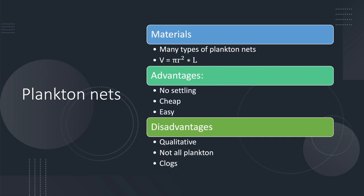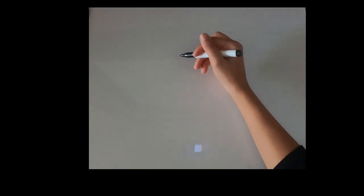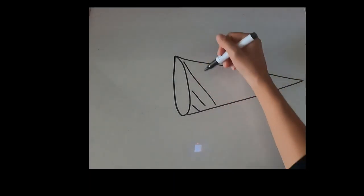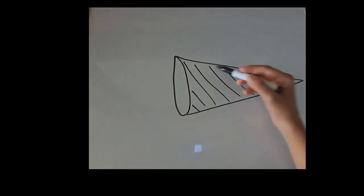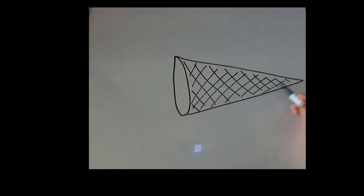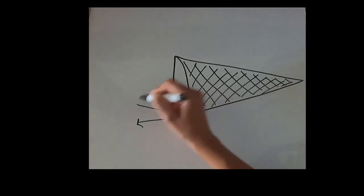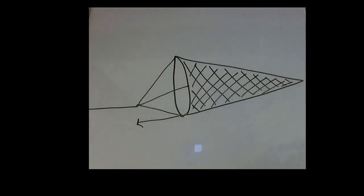The final sampling method that we will explore is a plankton net. The general idea behind this method is that plankton will be caught in a net as it is dragged through the water. There are many types of nets that can be used, and a plankton net can easily be created, something that we will do next.